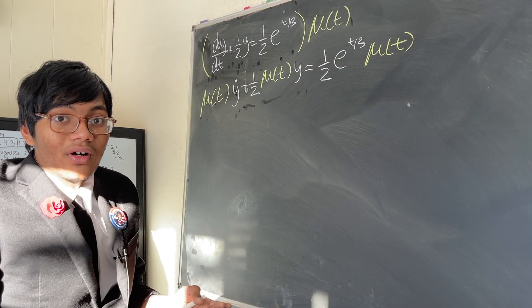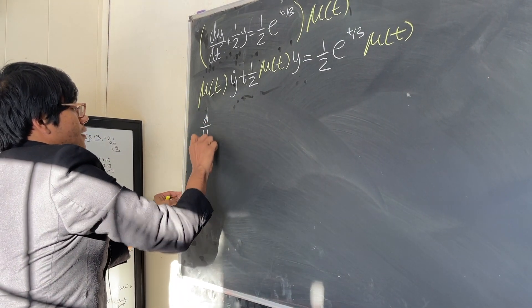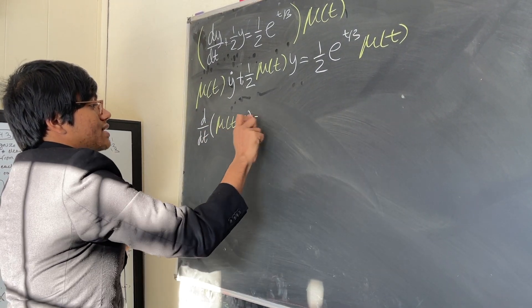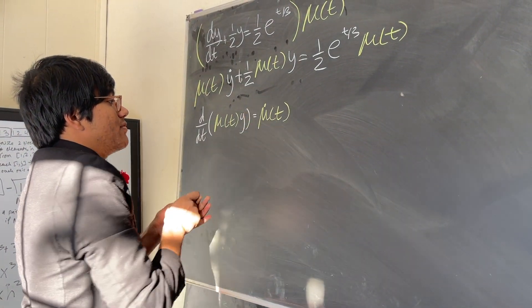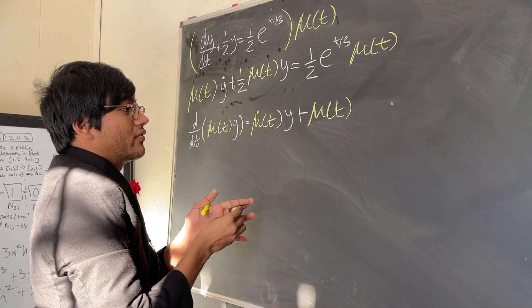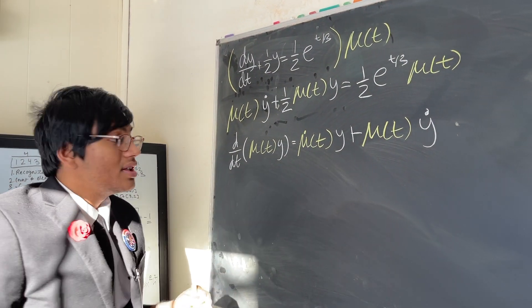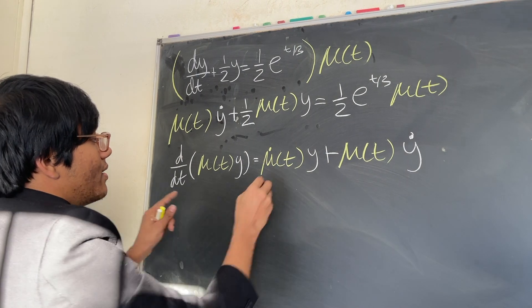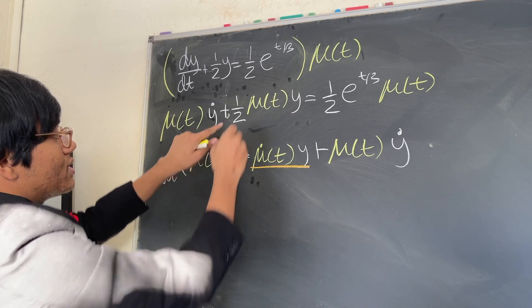If I take the derivative of mu of t with y, what am I going to have? Well, just apply the product rule. You're going to have the derivative of mu of t times y plus mu of t times the derivative of y. That's just the product rule. Okay, and so now if you look at this carefully, you're going to notice that something looks very nice. This term over here, mu prime of t times y, is very close to this term.